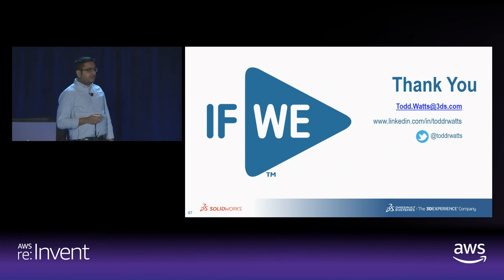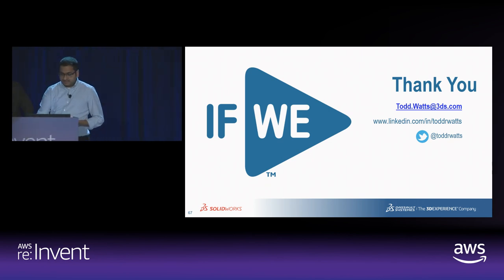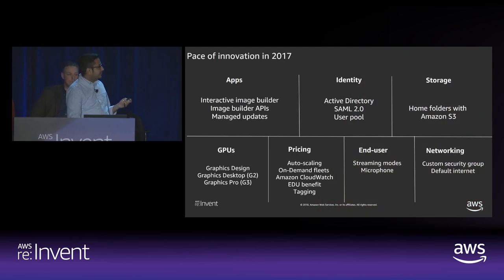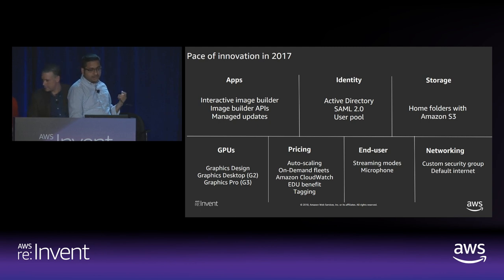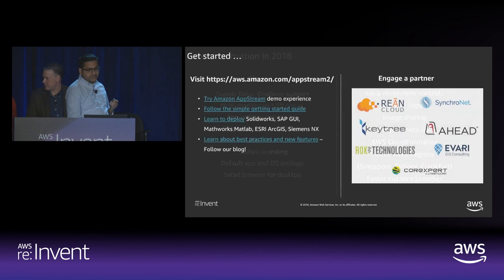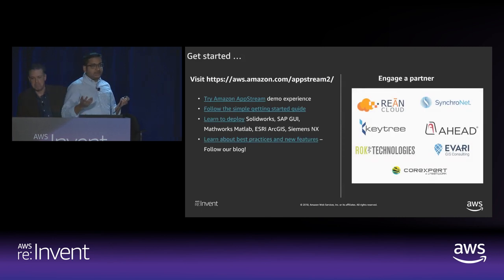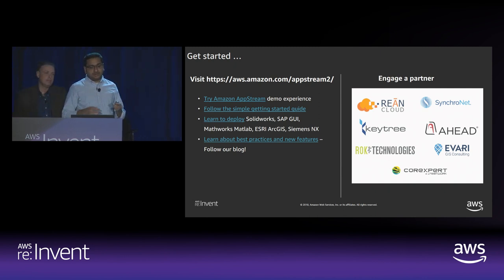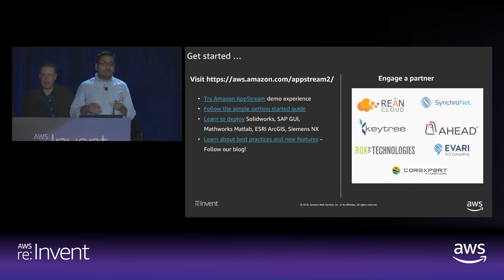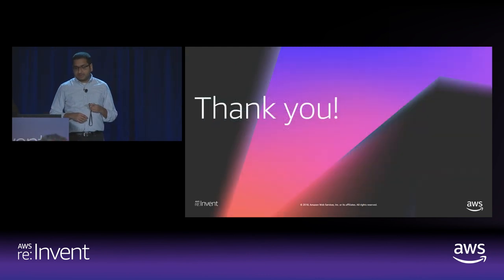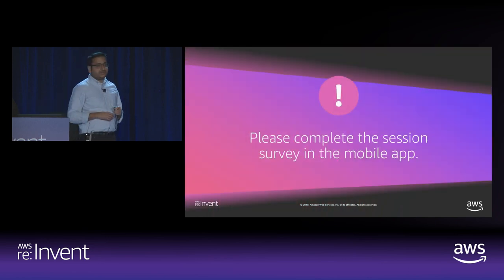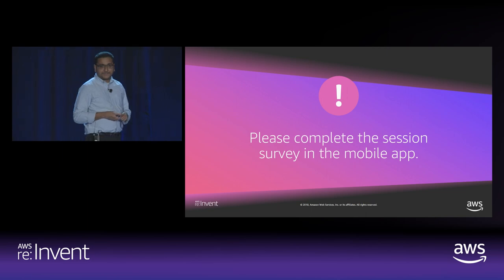We have about eight more minutes for questions. As for what's next — this is the pace of innovation with some of the features, details available on our product website. You can look at features launched in 2017 and 2018. We have an online experience where you can try some of the applications, a getting started guide to build your AppStream environment in a few hours, application deployment guides for specific applications, and a technical blog dedicated to AppStream covering best practices. Thank you, and please complete the session survey in the mobile application.